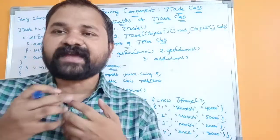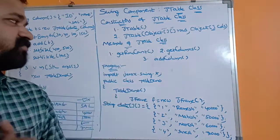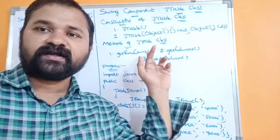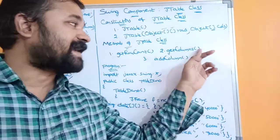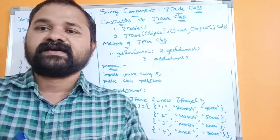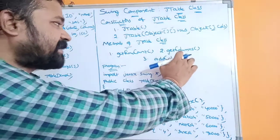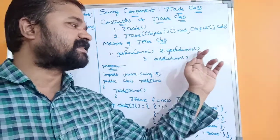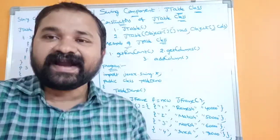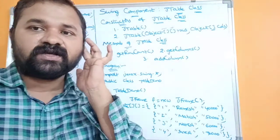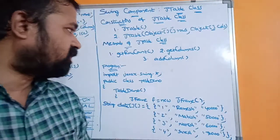Now let's see the methods of the JTable class. First, getRowCount() returns the total number of rows present in the table. getColumns() returns the total number of columns present in the table — note that the method name is getColumns(), not getColumnCount(). Next, addColumn() adds a column to the end of the table.